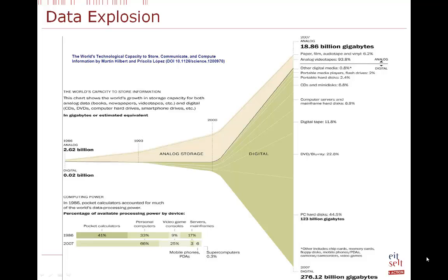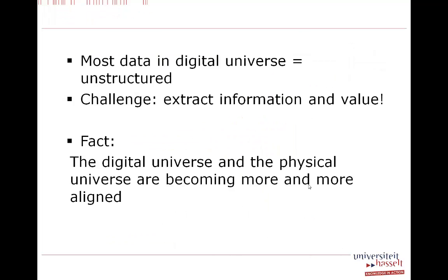Some background. The figure shows the amount of data stored throughout the years, going back to 1986 up to 2007 — so it's already an outdated figure. We see that where we previously had mostly analog storage, we now have almost always digital storage. The digital data concerns all types of information and is growing exponentially. Most data in the digital universe is unstructured, so the big challenge is to extract information and value out of that unstructured data.